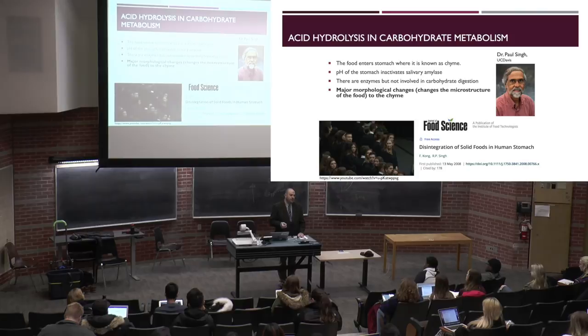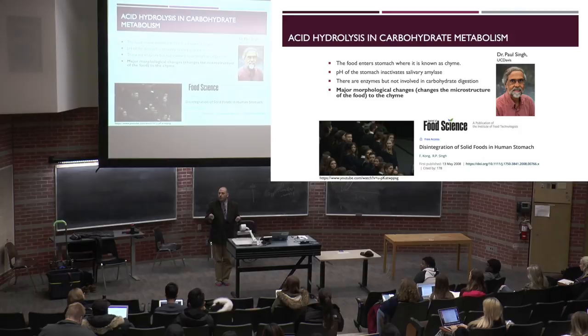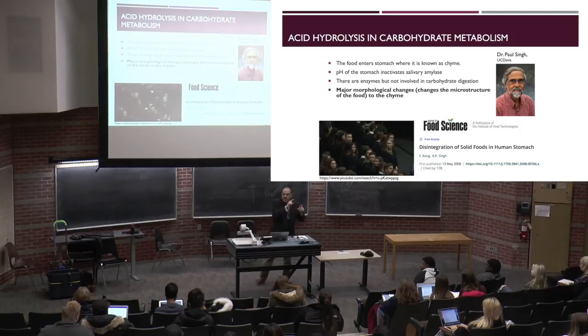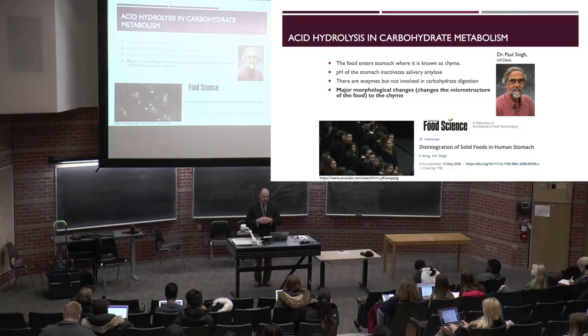Take oats: an unprocessed oat placed in water barely swells; a steel-cut oat swells a little; an instant oat swells very quickly. The glycemic index of those three oats — which have been kilned and rolled to different degrees — is significantly different. Each one, as processing increases, shows an increased glycemic index. The carbohydrates and sugars present are the same; it's the rate of breakdown that differs based on the physicochemical properties of that food.